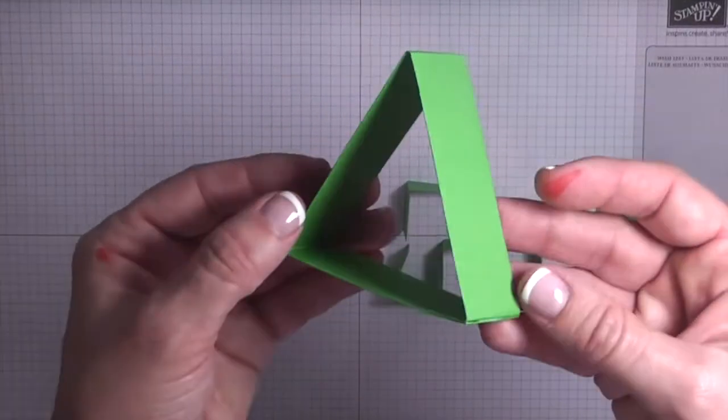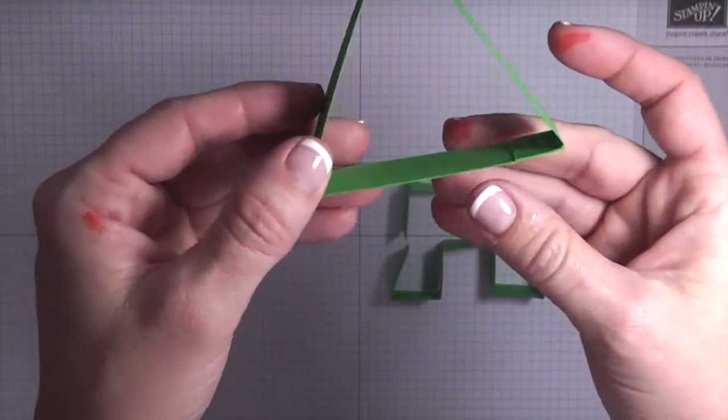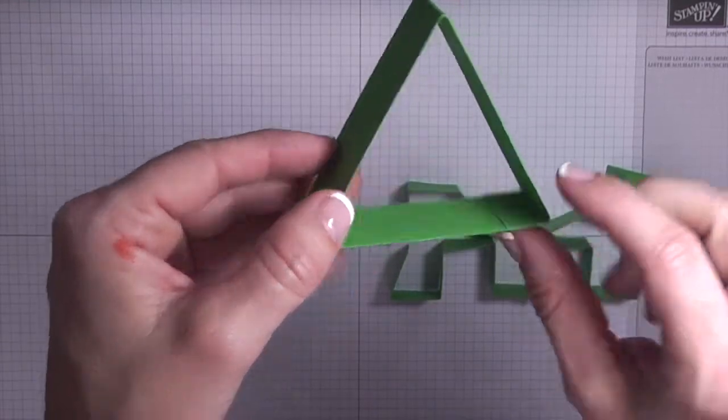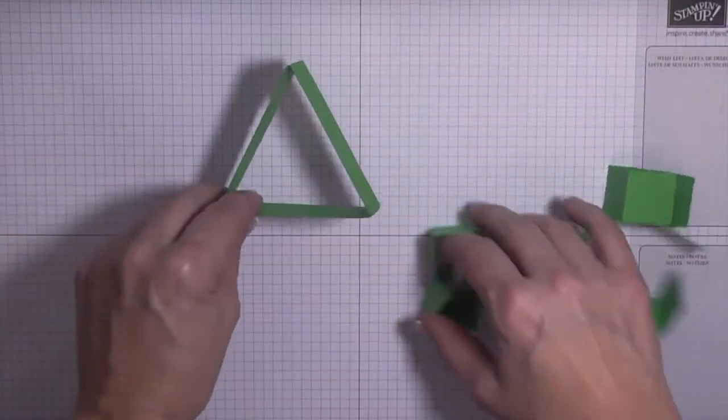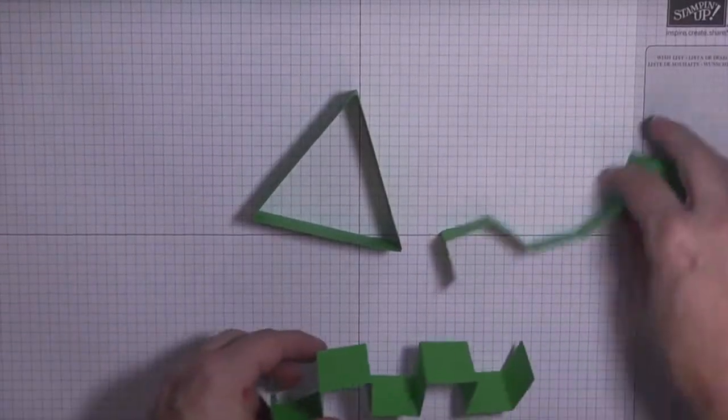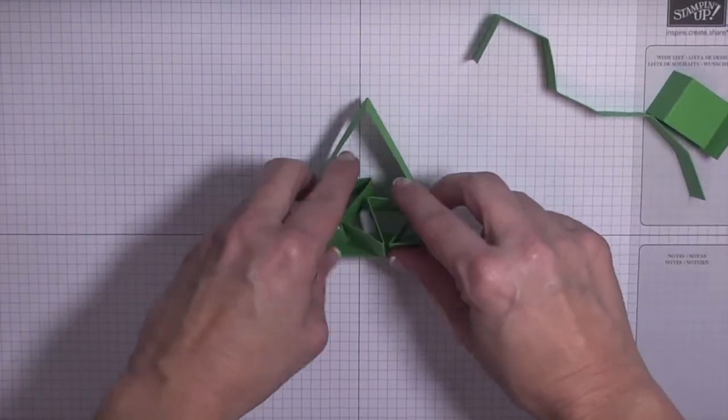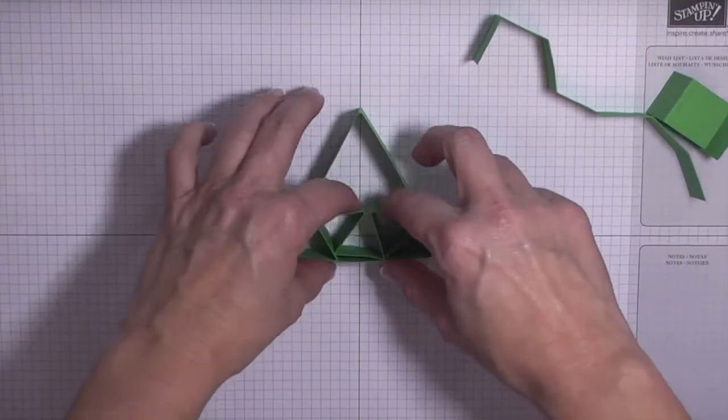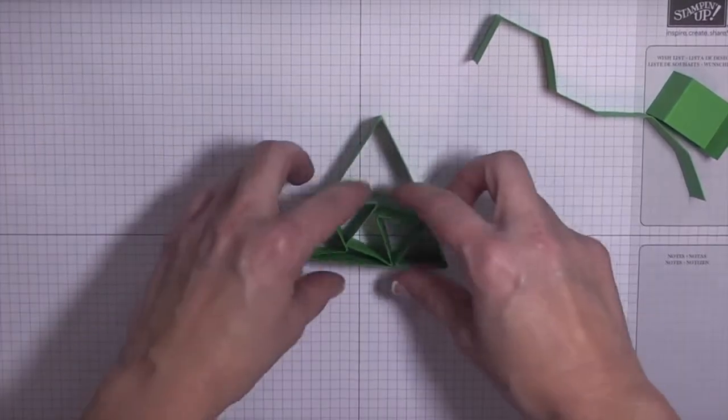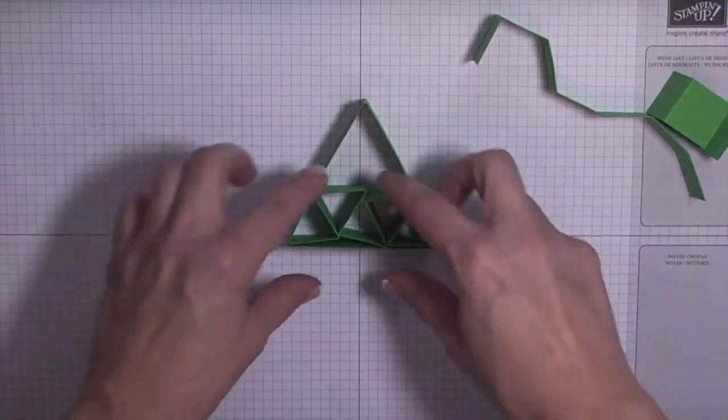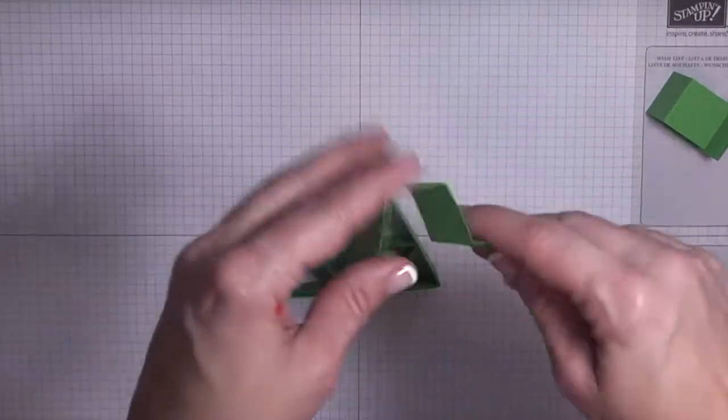All right. So now we can bring our frame back in. So what you're going to want to do is to make sure that your tab that you glued together is at the bottom. So we're going to start with the long piece first, and we are just going to fit that into the tree.